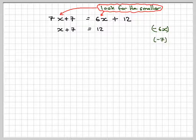And then we subtract 7 from both sides, so we get that x is equal to 5.